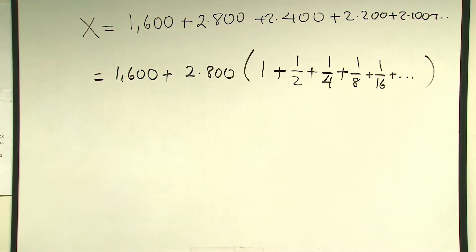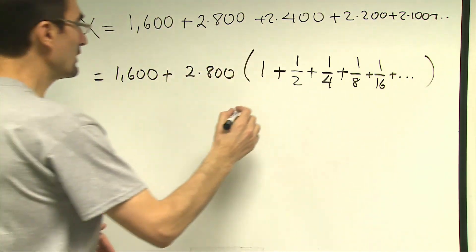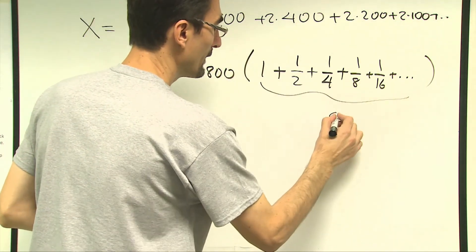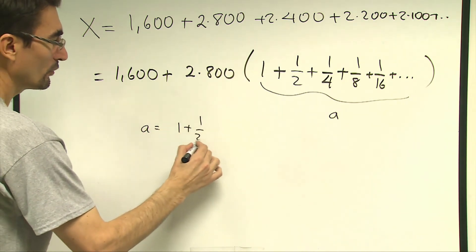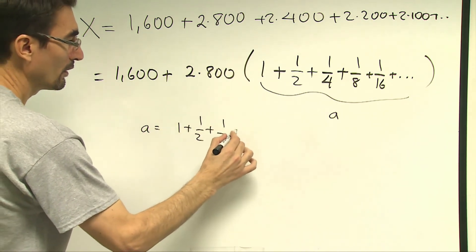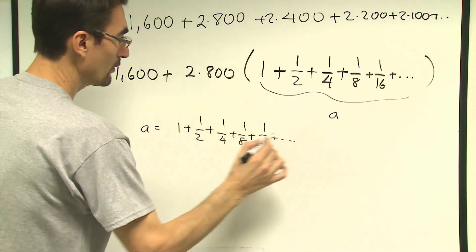So the question reduces to finding the sum of these infinite fractions. Let's call this number as a, so a is equal to 1 plus 1 over 2 plus 1 over 4 plus 1 over 8 plus 1 over 16 and so on.